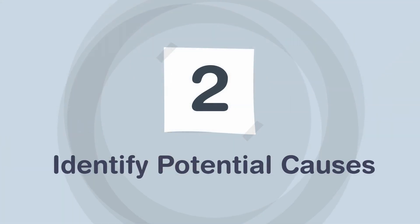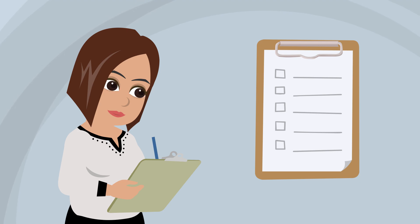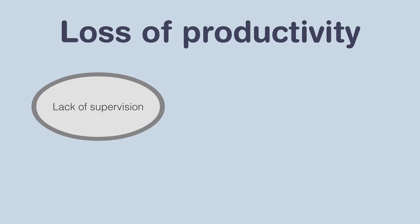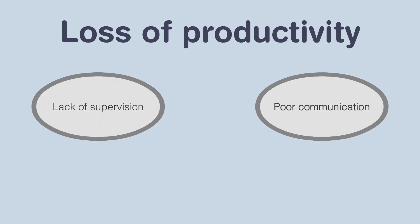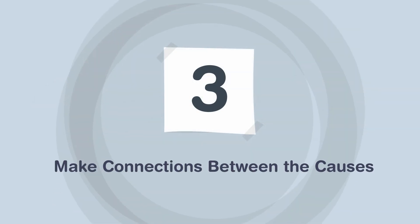Next, identify potential causes. List all the factors that positively or negatively influence the targeted issue. For example, a loss of productivity at work can be explained by a lack of supervision and poor communication.